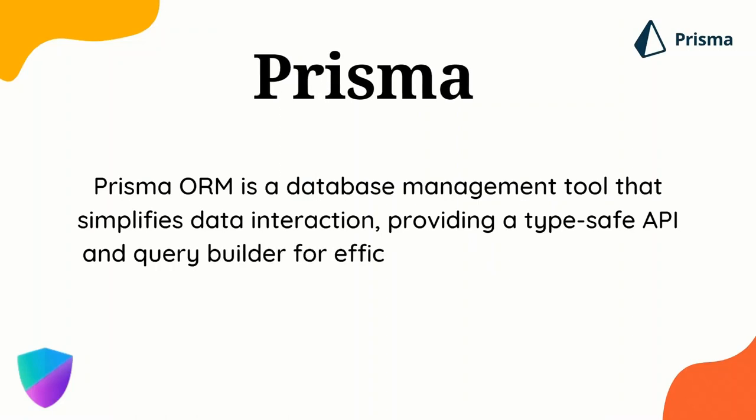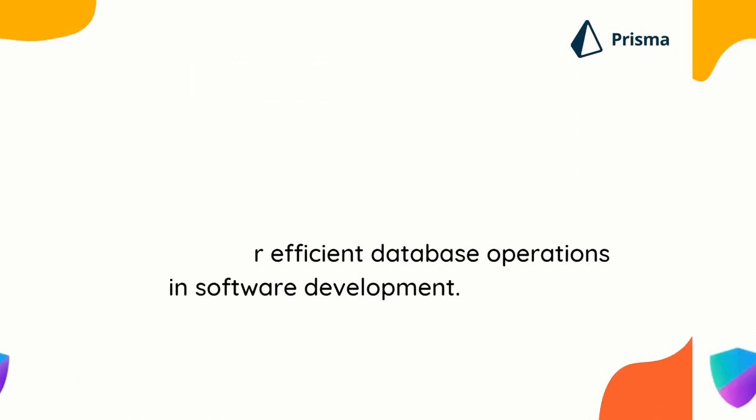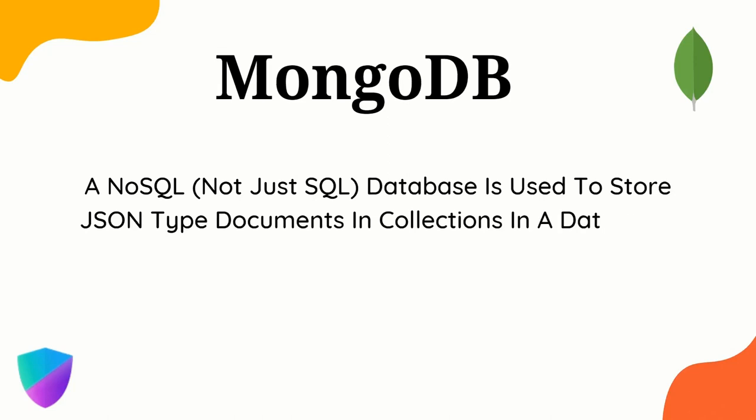Now we can learn about Prisma. Prisma is an ORM tool — an Object Relational Mapping tool — and it is a database management tool. It connects to the database and gives us query builders for insert, update, and CRUD operations. It provides a type-safe API and query builder for efficient database operations. We'll also be using MongoDB, a NoSQL database that stores JSON-type documents inside collections. A document is like a record, a collection is like a table.